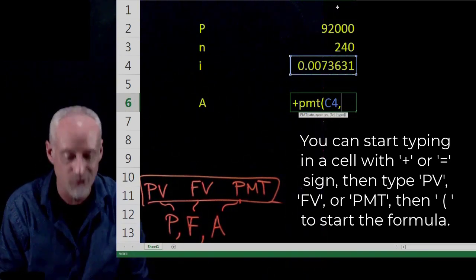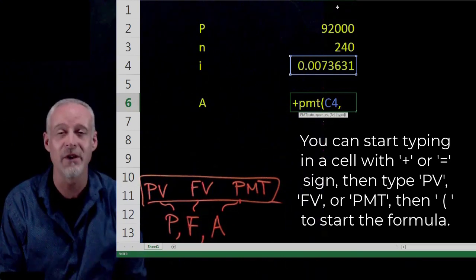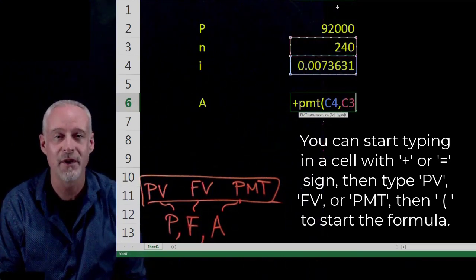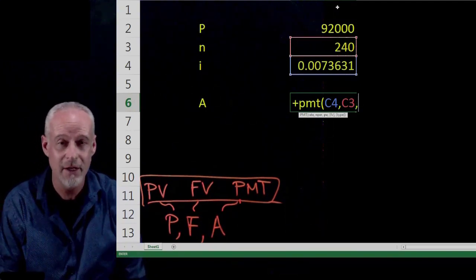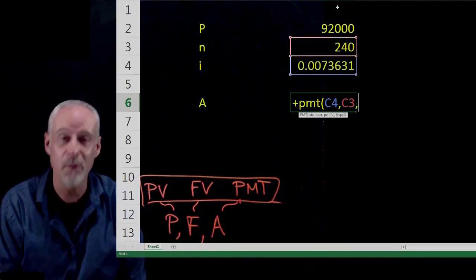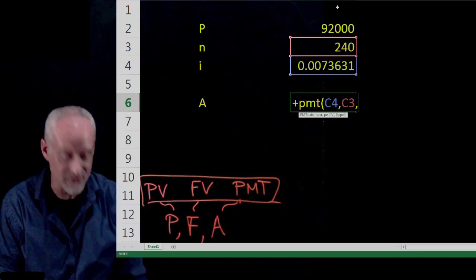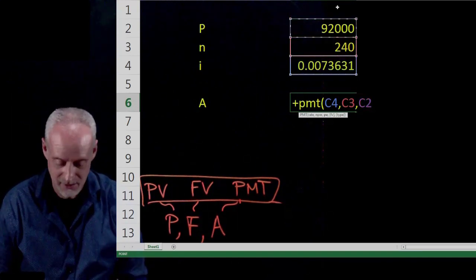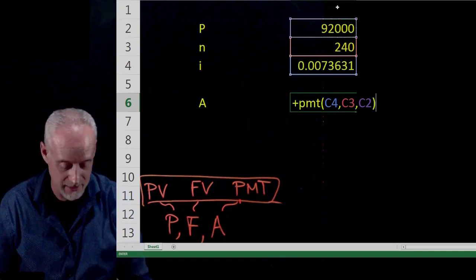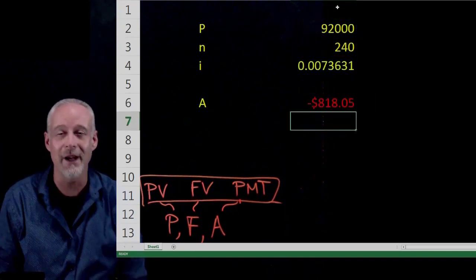And then it asks me for the number of periods. So I go up to this cell. I hit comma. And now it asks me for the present value. Well, the present value is up here in this cell. I close the brackets. And voila. Look at that.